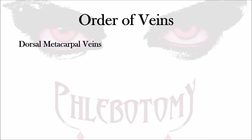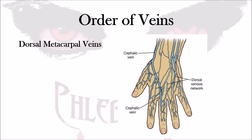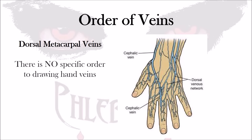If all three veins are not accessible on the arm, then we need to look at the back of the hand. The back of the hand veins are referred to as the dorsal metacarpal veins. There is no specific order to drawing hand veins — whatever vein you feel comfortable with when inspecting the dorsal metacarpal veins on the back of the hand, you can attempt to draw any one of those veins.